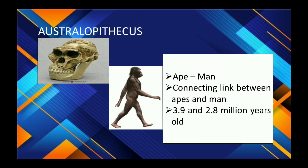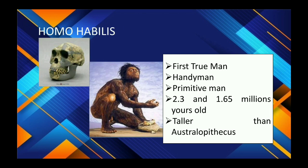Next is Homo habilis, the first true man, also called 'skillful man' or 'tool maker.' It had bipedal locomotion, dated 2.3 to 1.65 million years old, and was taller than Australopithecus. They had a flattened skull, were cannibalistic, were hunters and gatherers, had less body hair, and a brain capacity of 700 to 800 cc. They were the first to use tools.